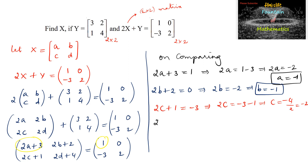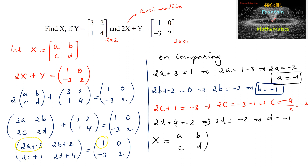We can write 2D plus 4 is equal to 2, so 2D is equal to negative 2, which gives D equals negative 1. So we got the matrix X equal to [A, B, C, D], which is equal to [-1, -1, -2, -1]. This is the required matrix.